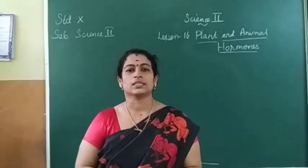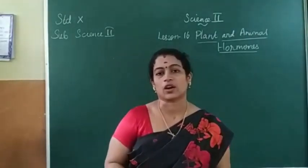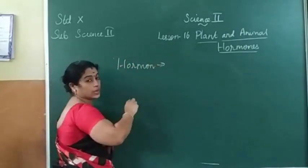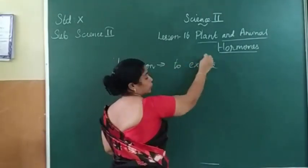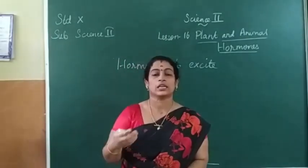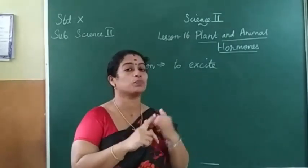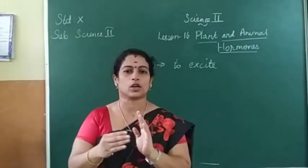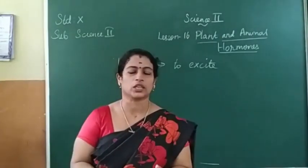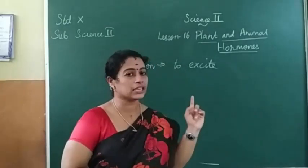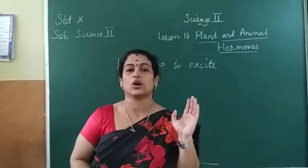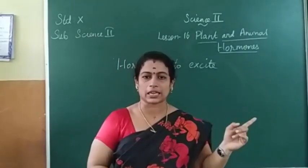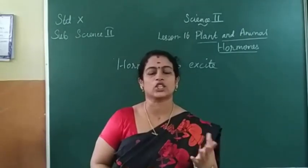So what are hormones? Hormones are chemical substances — the meaning of the word is 'to excite.' Both plants and animals are able to produce hormones. In this chapter we are going to study about both plant hormones and animal hormones: where they are produced and what is their function.